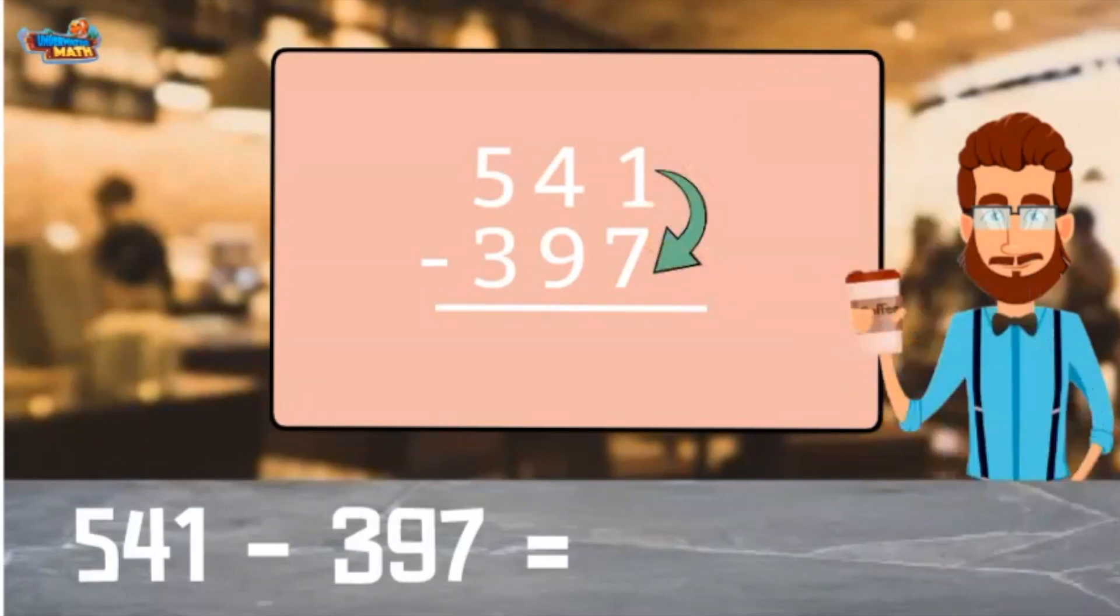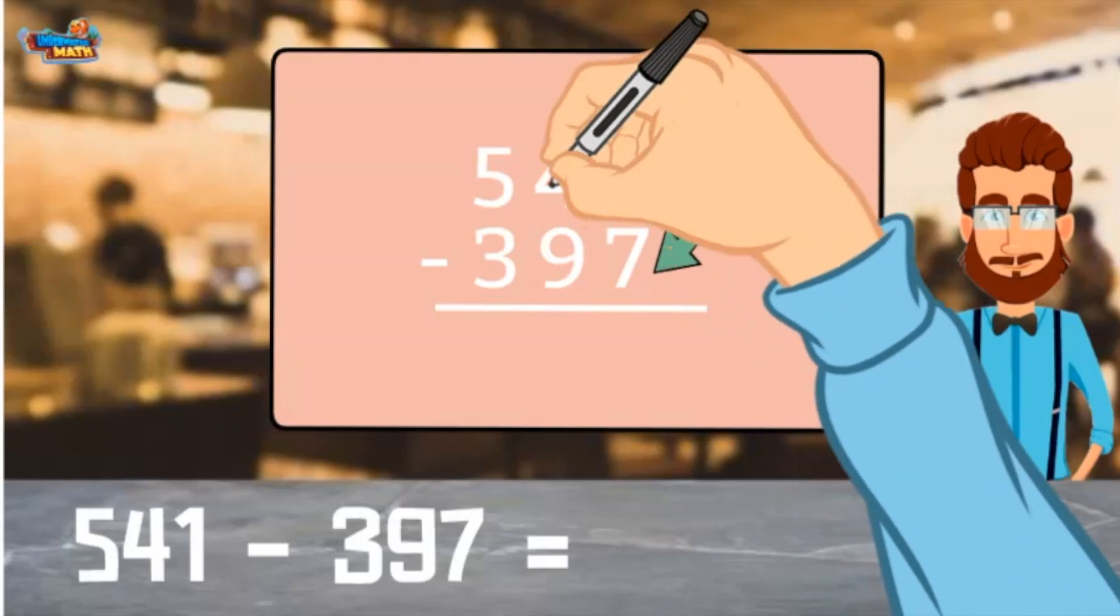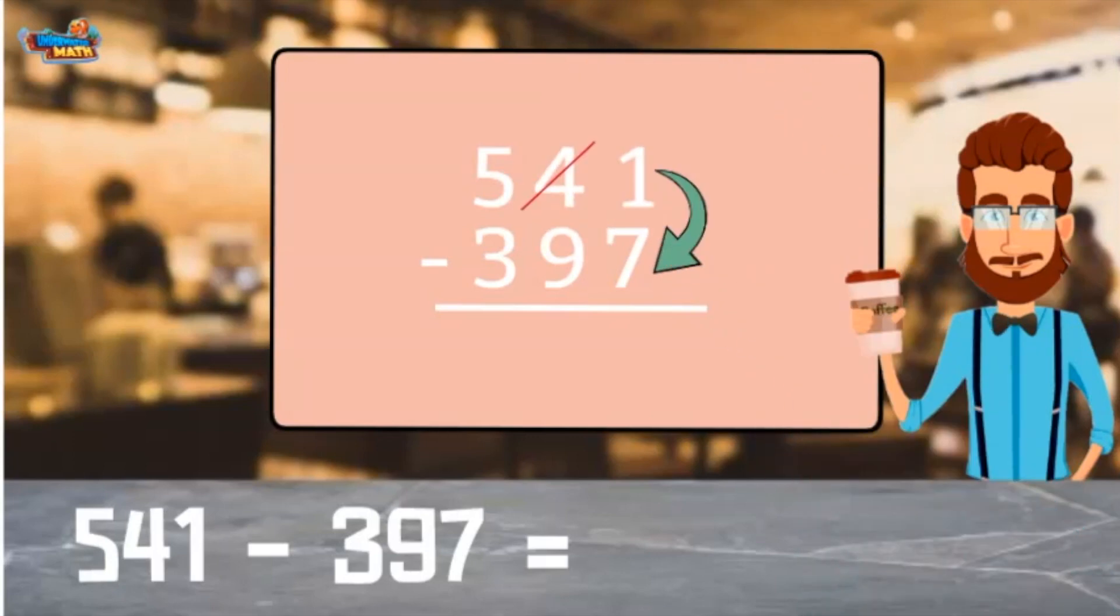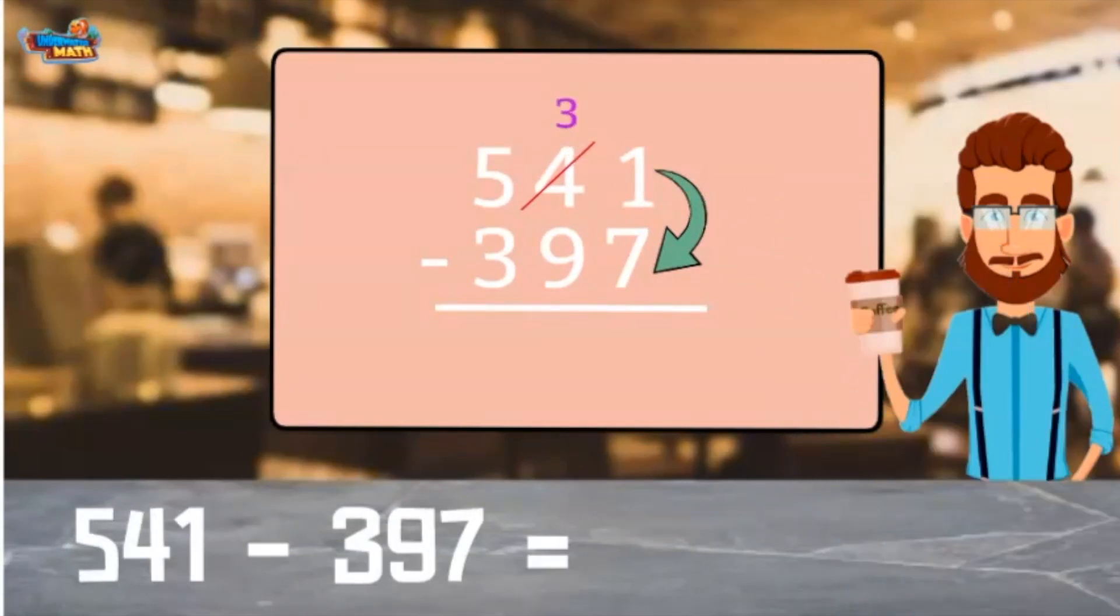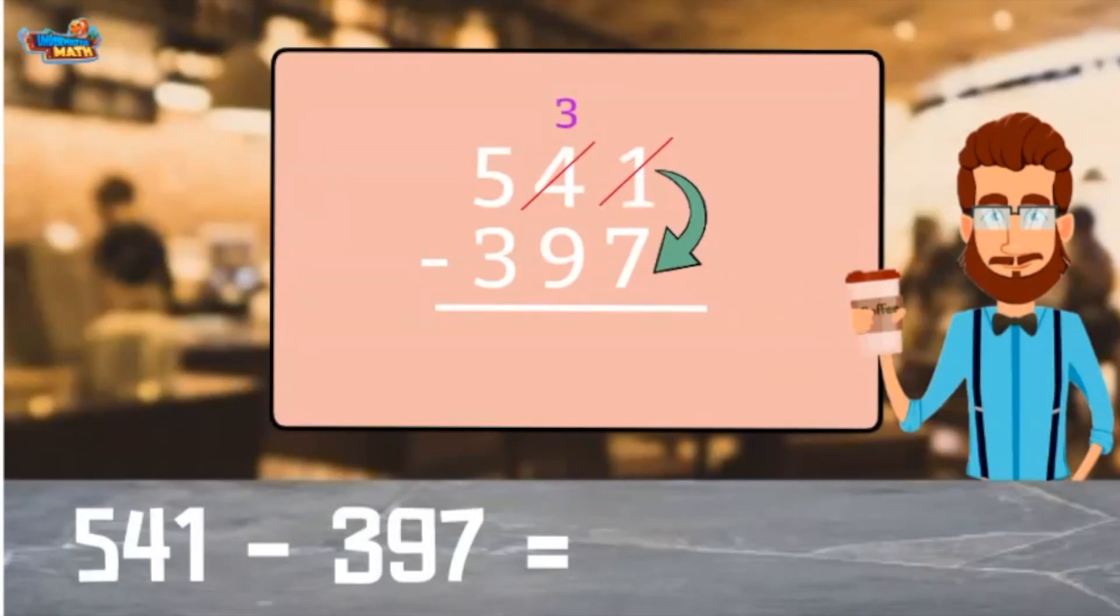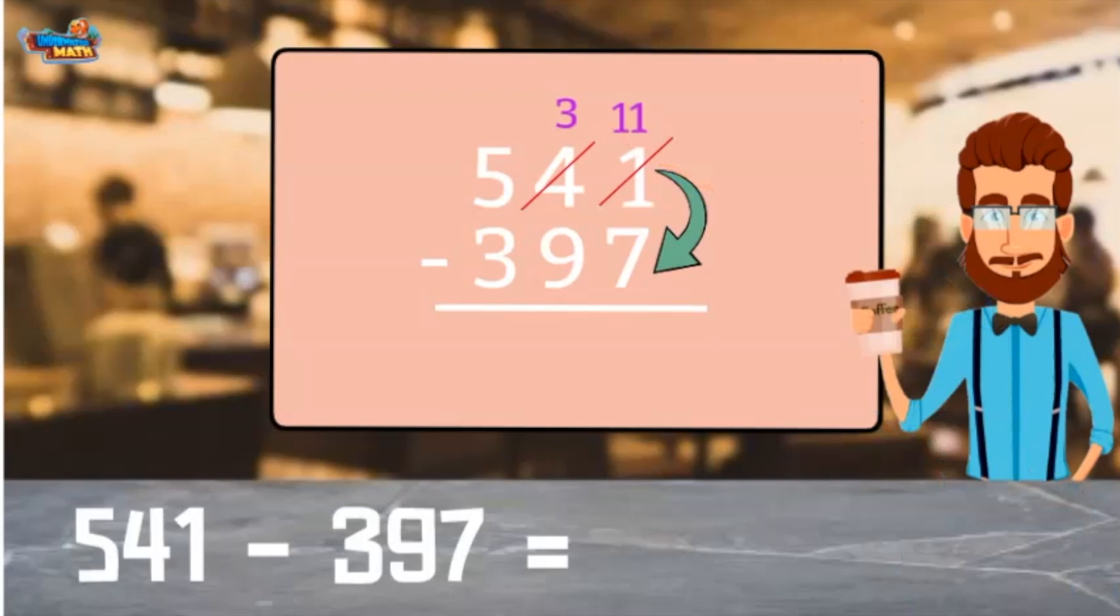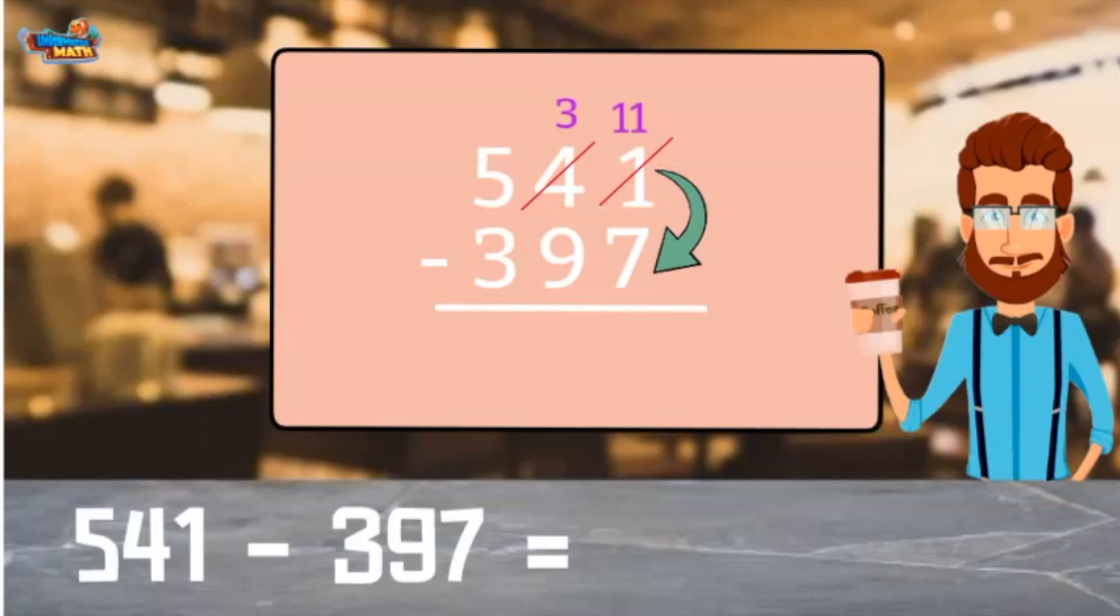Looking at the ones place, there is more on the floor. I need to go next store and borrow from the tens place. Cross out the 4, make it a 3. Cross out the 1 and make it 11 because I have added a group of 10 to the ones place. Now we can subtract the ones. 11 minus 7 equals 4.